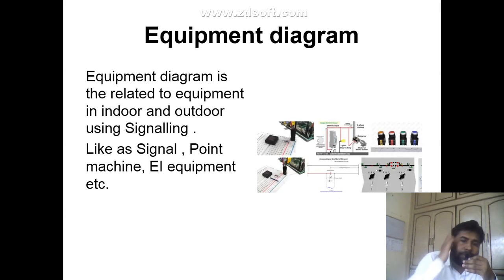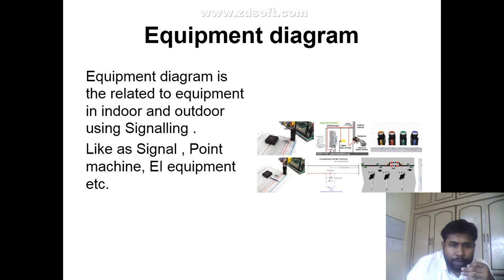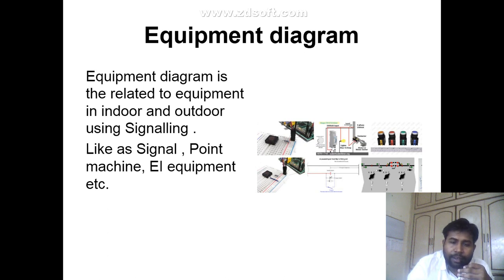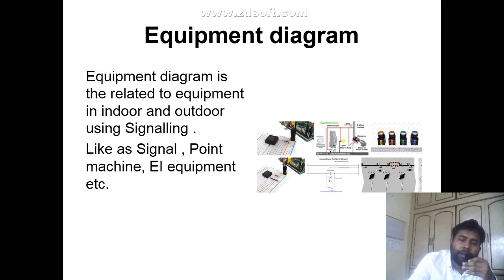Next is the equipment diagram. The equipment diagram is related to equipment used indoors and outdoors in signaling and telecommunications, such as signals, point machines, EI equipment and other types of equipment.